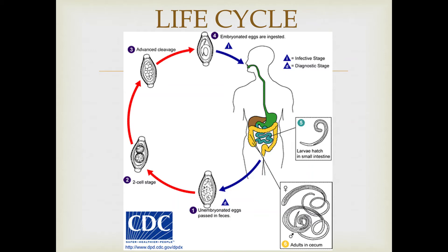The female worms then begin to oviposit 60 to 70 days post-infection. The female worms in the cecum are able to shed around 3,000 to 20,000 eggs per day. The lifespan of these adult worms typically lasts for around one year.